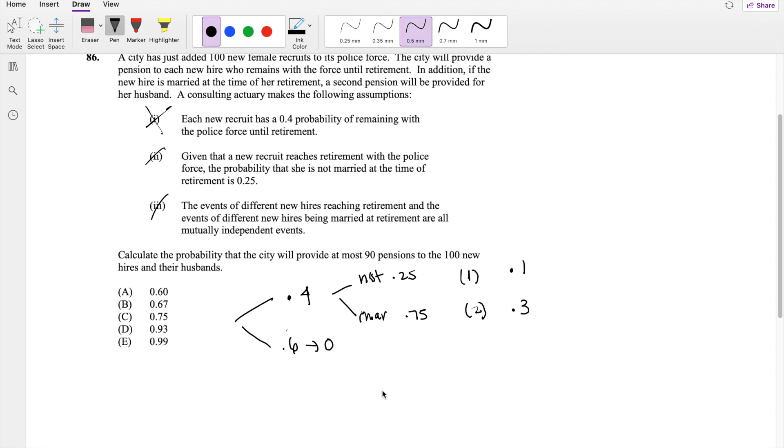The expected value of X, where X is the number of pensions, equals 1 times the probability that you're not married and stay until retirement, plus 2 times the probability that you're married and stay with the company. This equals 0.1 times 1 plus 2 times 0.3, which equals 0.7.